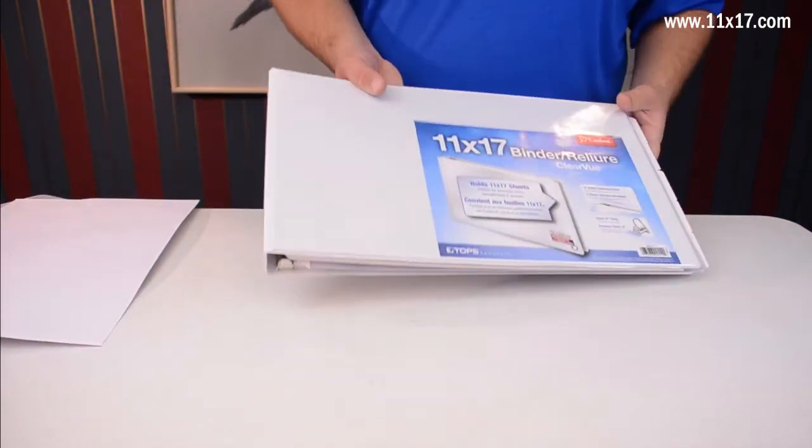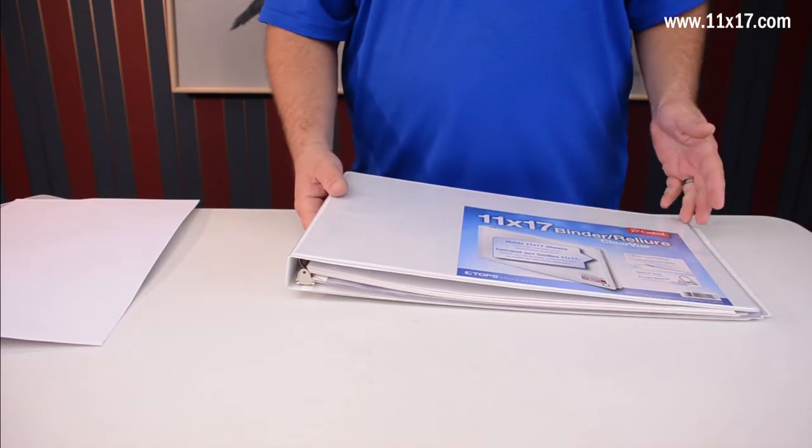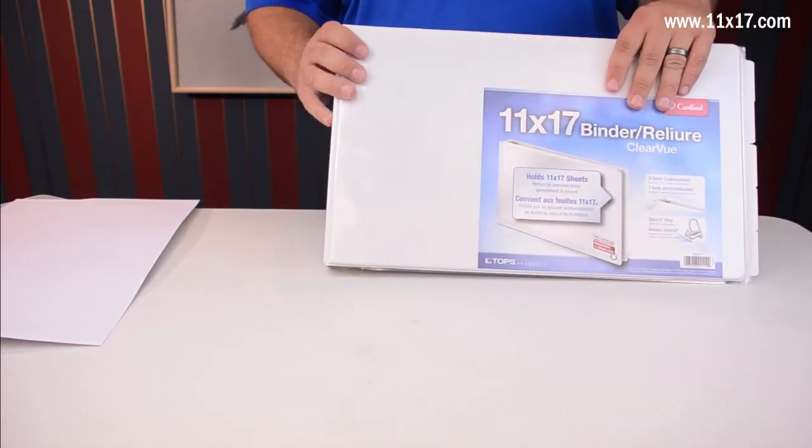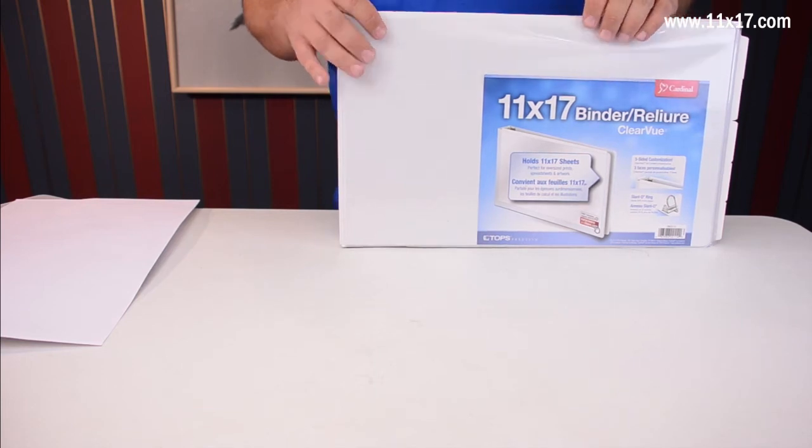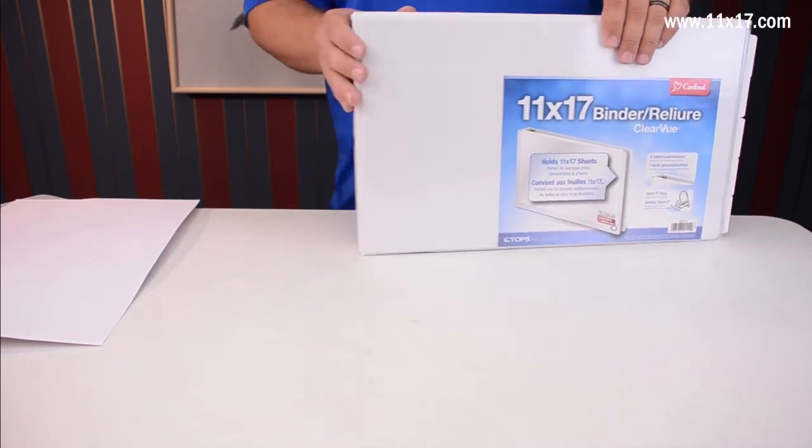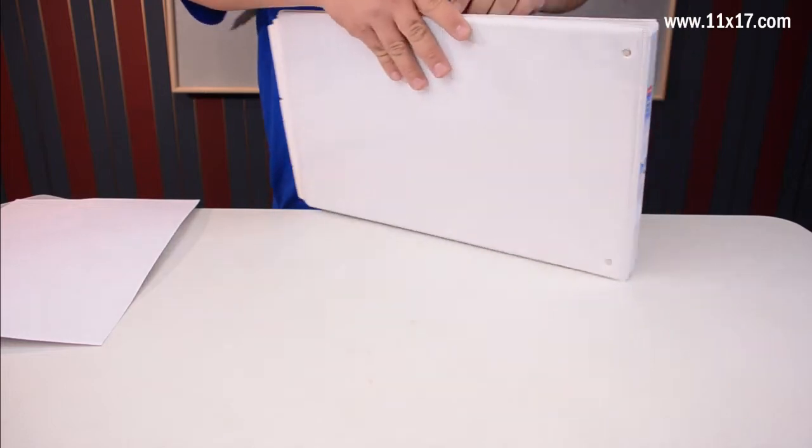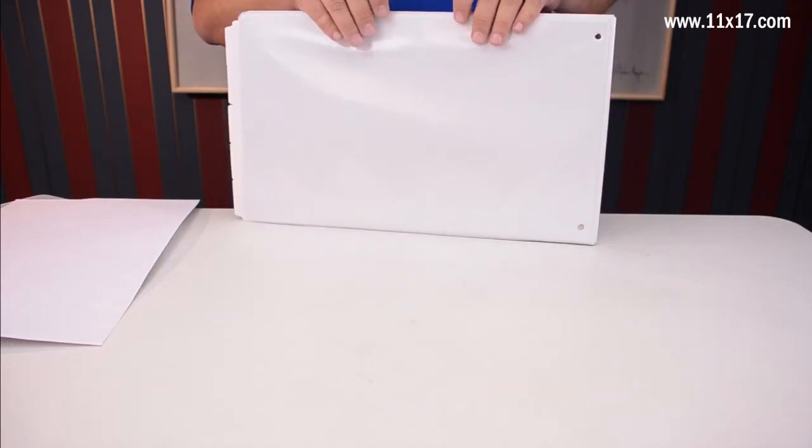Now let's take a look at the other Cardinal binder we have. This is what they call the Clearview. The Clearview, as I was pointing out with the Ruby Paulina brand, has a top opening pocket. It also has it on the spine as well as the back panel. All of these are top opening.